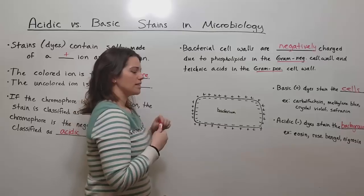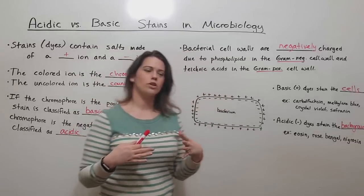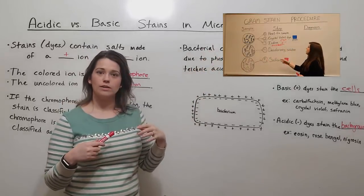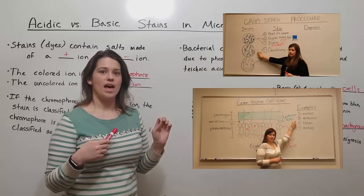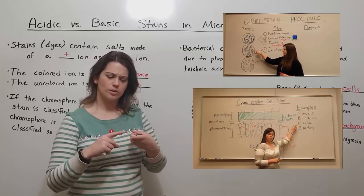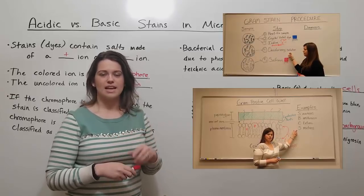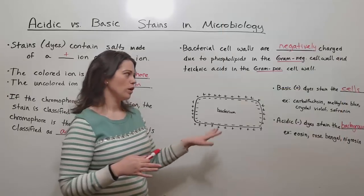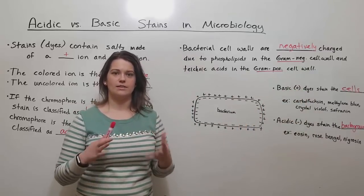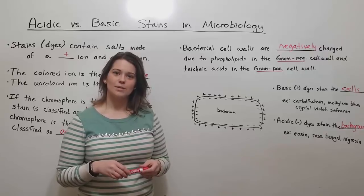So that is it for acidic versus basic stains. You might want to review the gram-positive versus gram-negative cell wall - if you do, please check out my video on that. I also have videos on several common microbiology stains, including the gram stain, the acid-fast stain, and the endospore stain. If you're interested in learning more about how these different stains are used to visualize different types of cells, then check out those videos too. Thank you for watching today at Biology Professor.